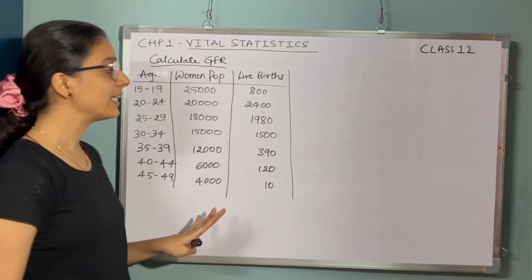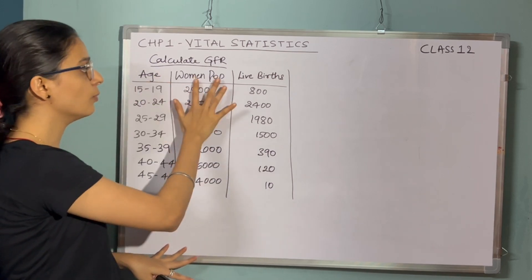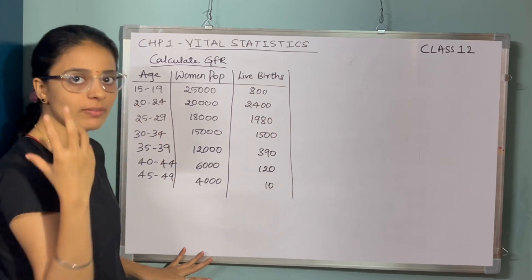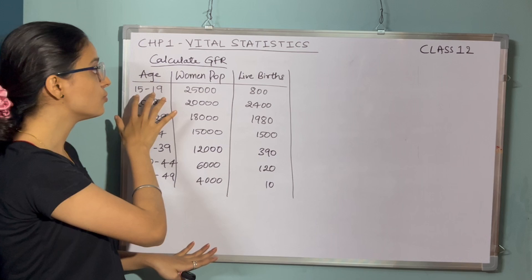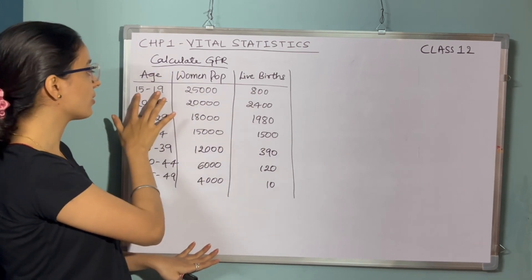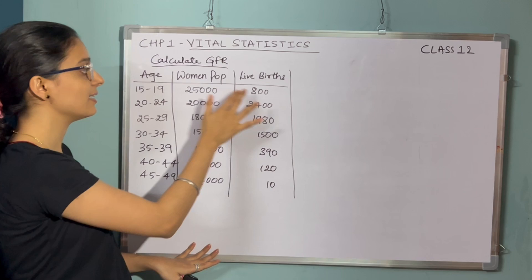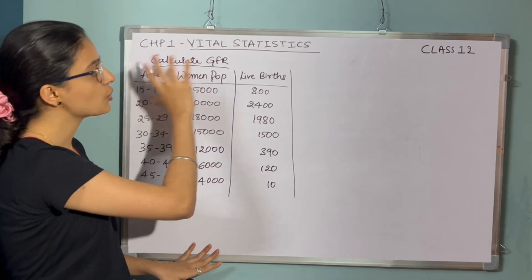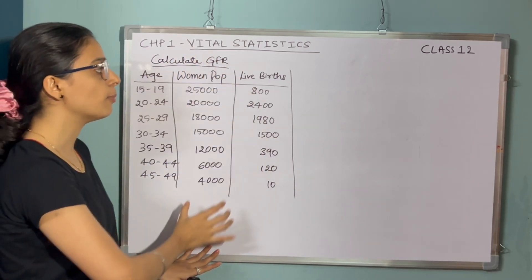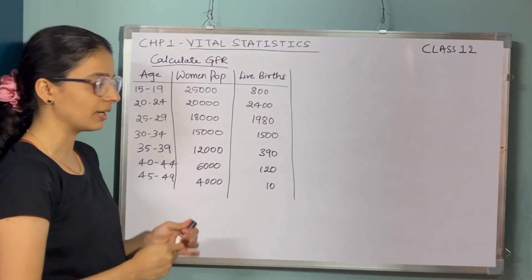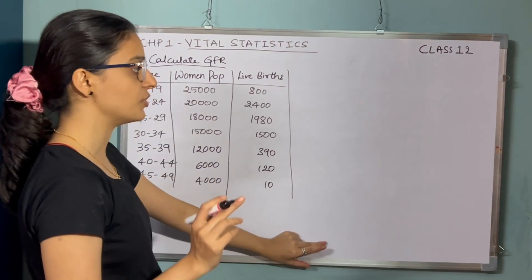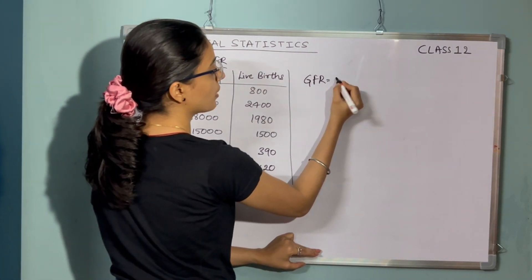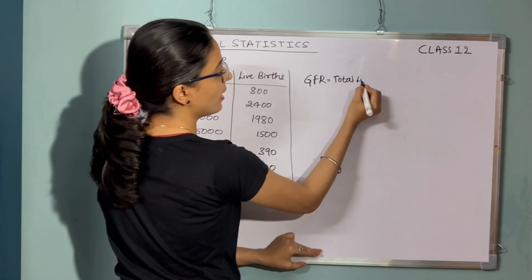Let's look into the problem related to GFR. The problem gives women population and live births for different age groups. Notably, live births from age 15 to 19 is 800, dropping to only 10 for age 45 to 49. The entire scenario of women population and live births is given. First, let us write down the formula: GFR equals total live births in a year.